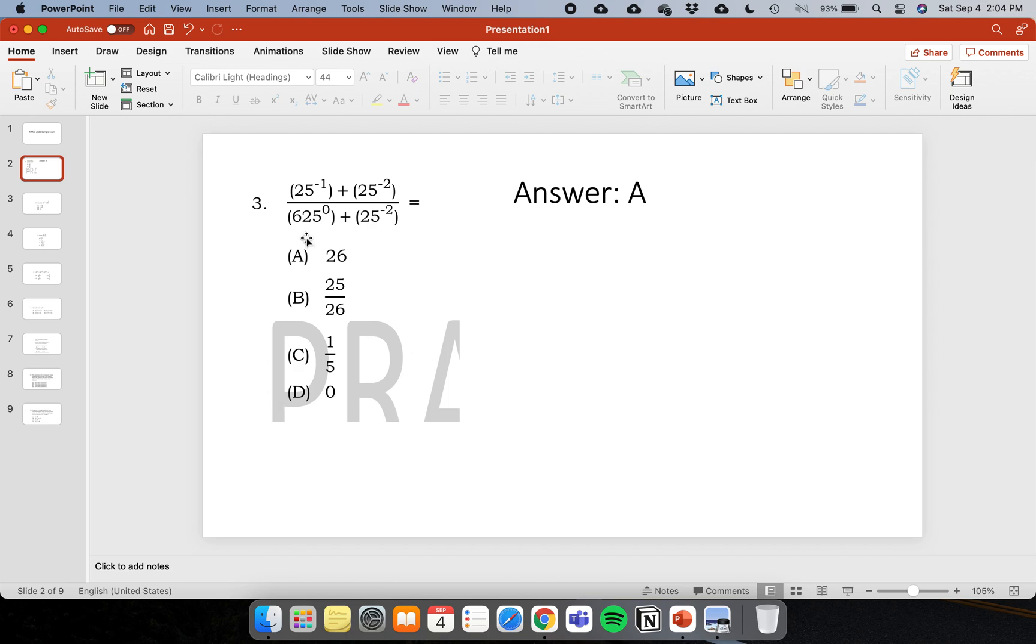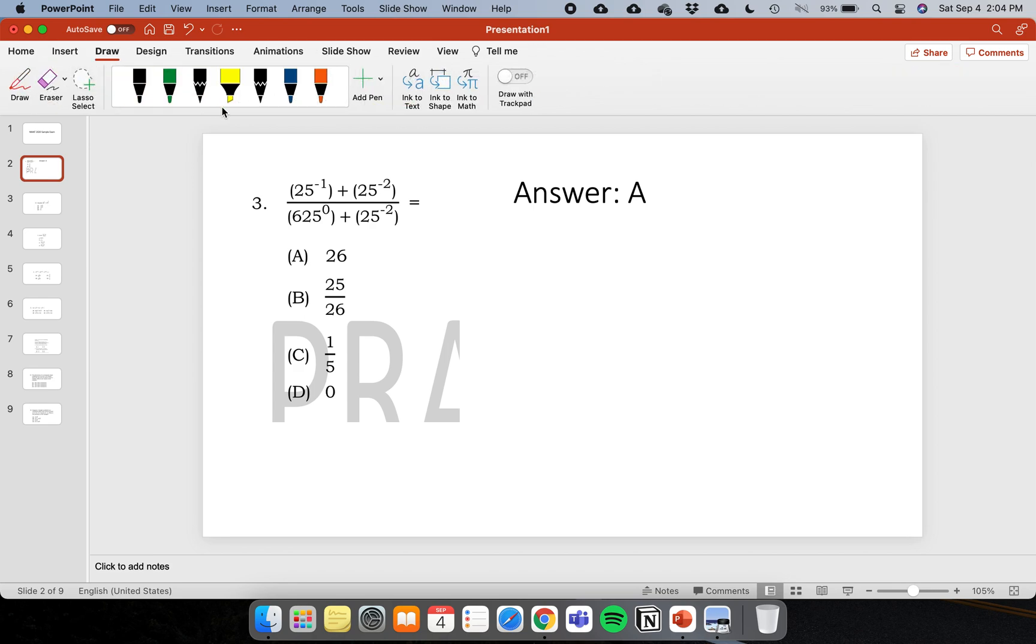So in number three, I just have a correction here. To have an answer that is A in the answer key, you have to make this multiplication. So you have to erase the addition here.